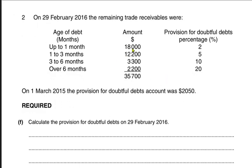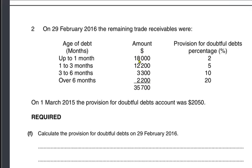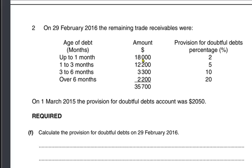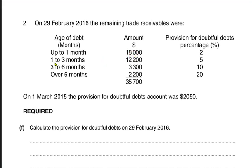We have 18,000 worth of debt where the customer has not paid for one month. Then there is 12,200 for which more than one month has passed but less than three months. Then we have three to six months old debt worth 3,300, and lastly debt of 2,200 for which six months have passed.